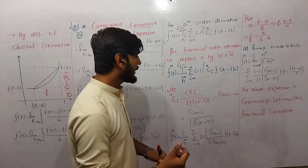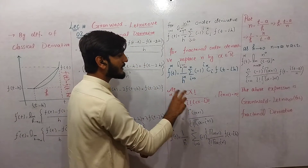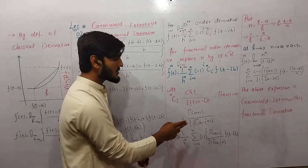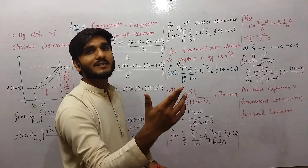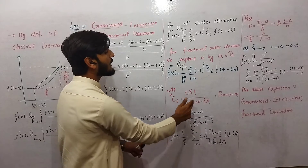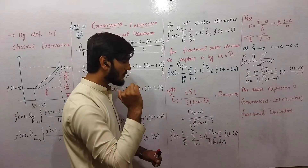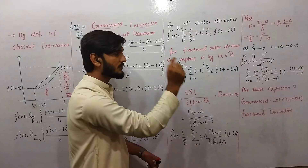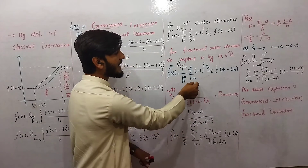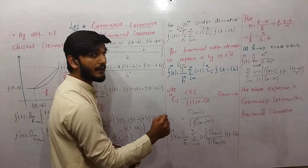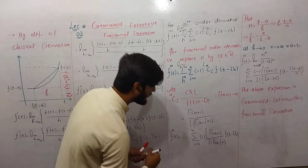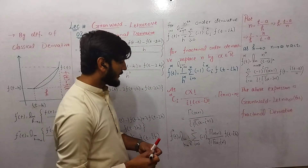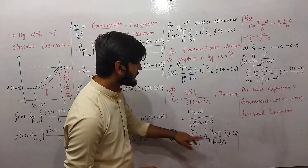Replacing the factorials using the gamma function: alpha factorial becomes gamma(alpha plus 1), i factorial stays as i factorial since i is a natural number, and (alpha minus i) factorial becomes gamma(alpha minus i plus 1). Substituting this expression for C(alpha, i) into the formula, we get the limit as h approaches 0 of 1 over h^alpha times the summation involving the gamma function terms.